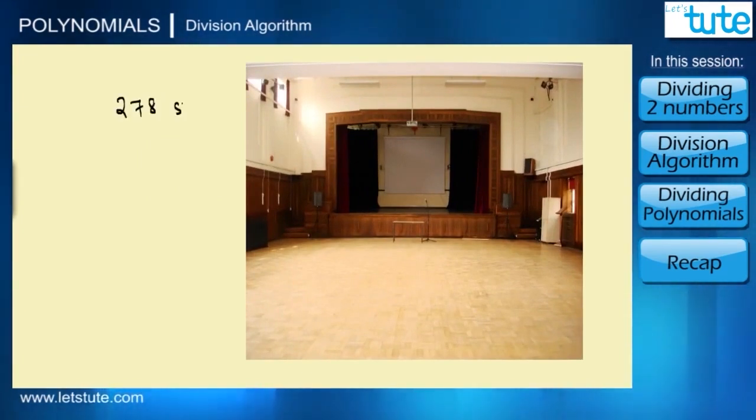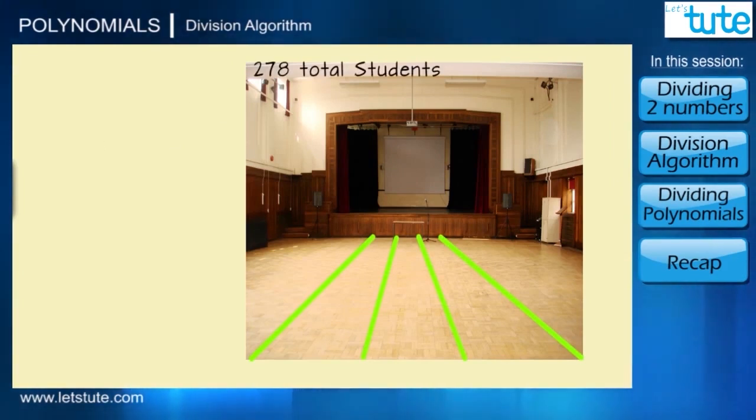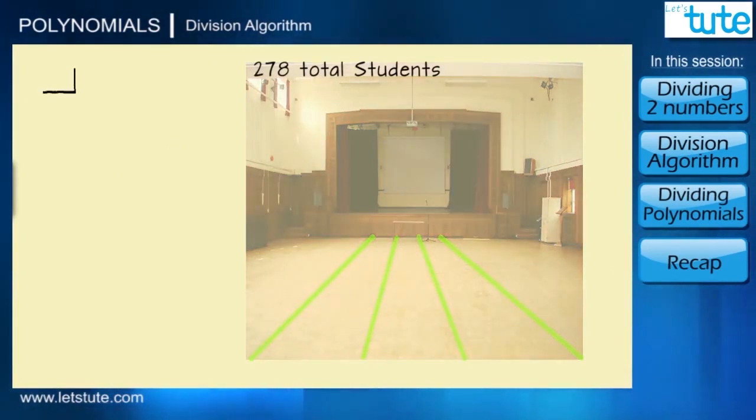278 students and they have to form four rows and stand such that each row has the same number of students. So how would you find the number of students in each row? We would divide 278 students by four rows.